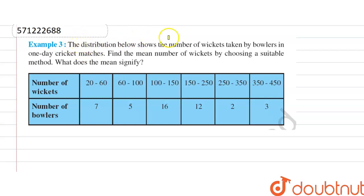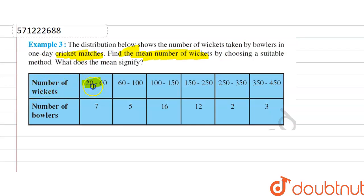The question is: the distribution below shows the number of wickets taken by the bowler in one day cricket matches. Find the mean number of wickets by choosing a suitable method.